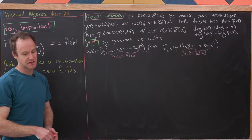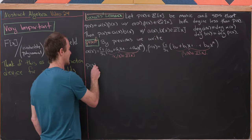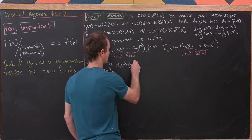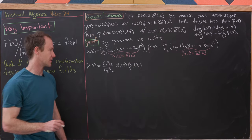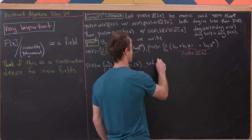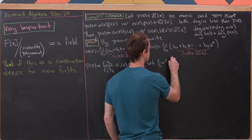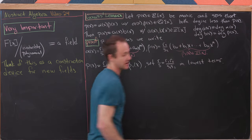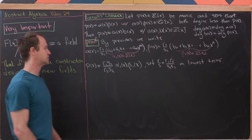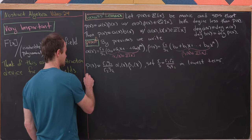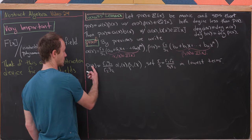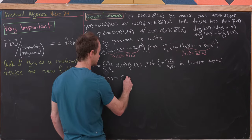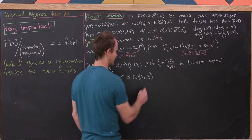For the proof, apply the previous lemma to write α(X) = (r₁/s₁)·α₁(X) and β(X) = (r₂/s₂)·β₁(X) where α₁, β₁ ∈ Z[X]. Then P(X) = (r₁r₂)/(s₁s₂) · α₁(X)·β₁(X). Set r/s = (r₁r₂)/(s₁s₂) in lowest terms. Multiplying through by s gives s·P(X) = r·α₁(X)·β₁(X), an equation entirely in Z[X].